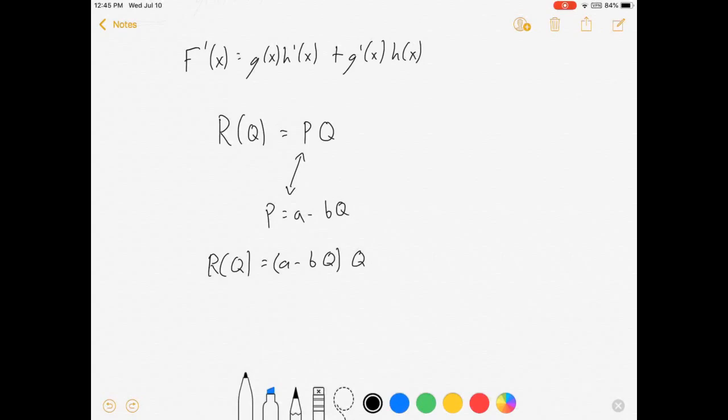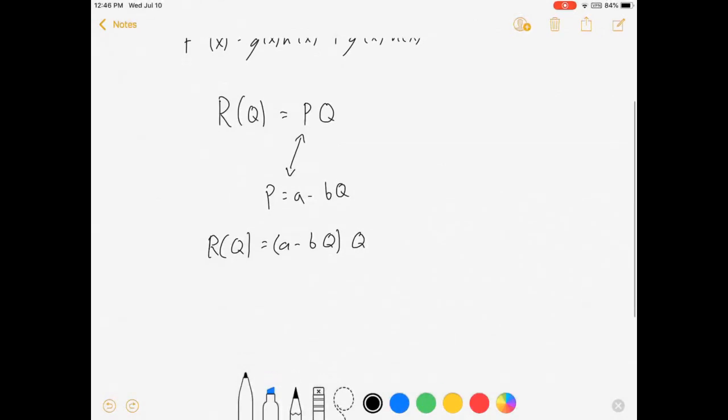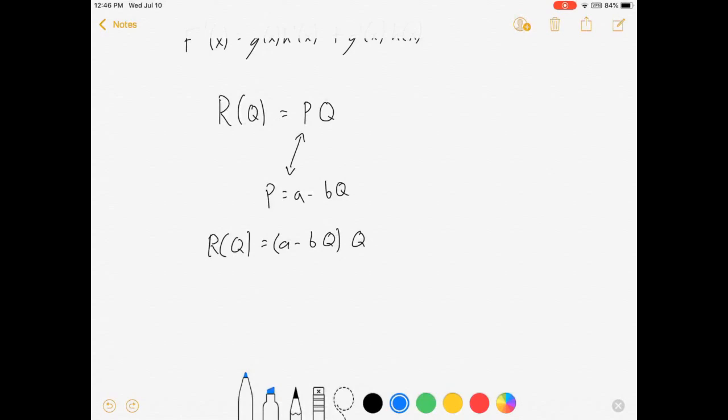That means that r of q is equal to a minus bq times q. Now I realize I don't have to use the product rule here. I could call this aq minus bq squared and do it with the power rule. For the sake of just demonstrating this rule for this video, I'm not going to do that. So, let's stick with it.